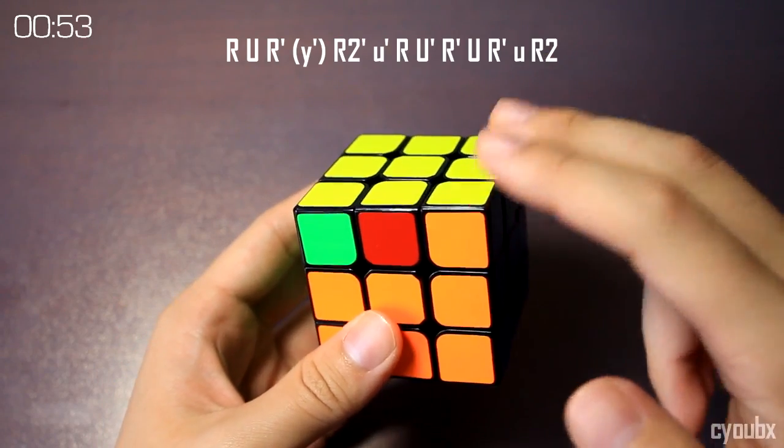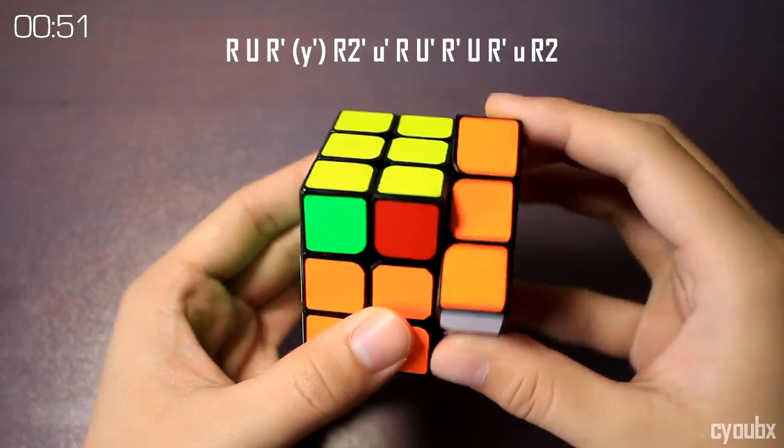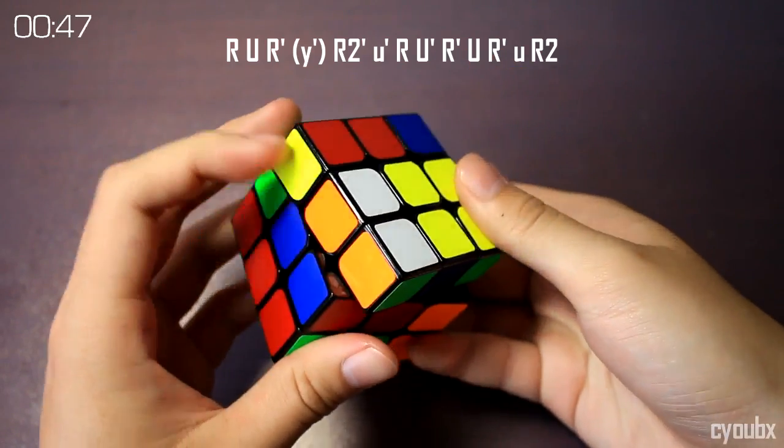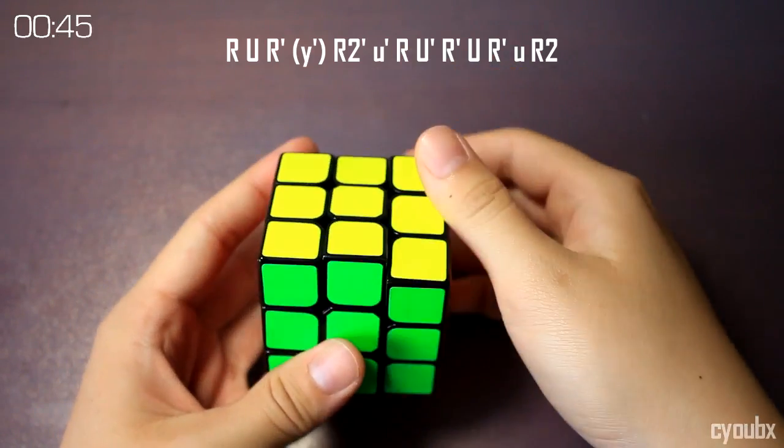What's really cool about this algorithm is that the first three turns are going to be RUR prime, so to help you recall the algorithm after recognition, all you have to do is put your first two fingers on the two yellow pieces.